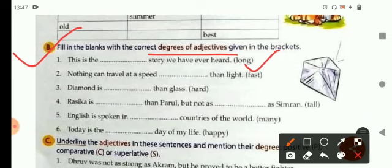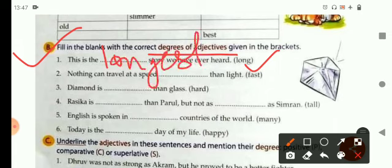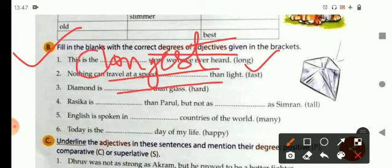The first one is, this is the blank story we have ever heard. And here, we will write longest, that is, the superlative degree. And we know that the word the, article the, is always used before the superlative degree.